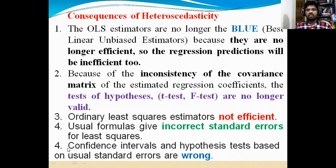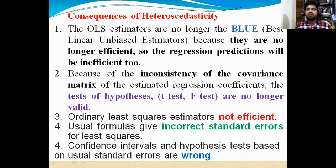The fourth one: the confidence intervals and hypothesis tests based on usual standard errors are wrong. How we can test hypothesis — as I told you: t equals coefficient of beta by standard error of beta. When you are testing hypothesis, the hypothesis test is based on usual standard errors — and those standard errors are wrong. When the standard errors are wrong, you will get different values. When the standard error is correct, you will get accurate values.